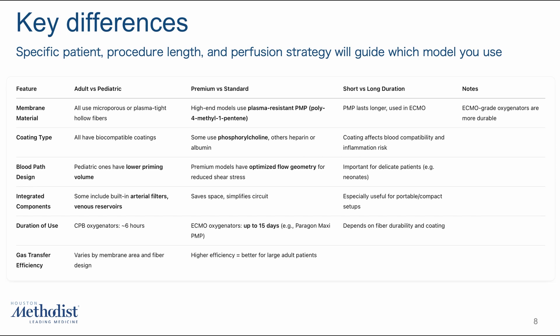Another essential factor is the duration of use. CPB oxygenators are typically designed for use of 6 hours or less, while ECMO-capable models can be used for 5 to 15 days, depending on the fiber material. Finally, we examine gas exchange efficiency, which is particularly crucial in adult cases where maintaining adequate oxygen transfer at high flow rates is essential.